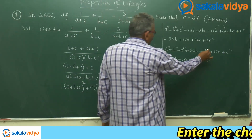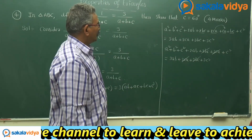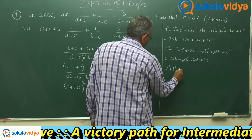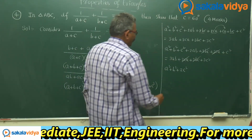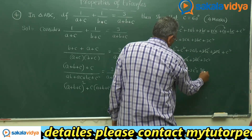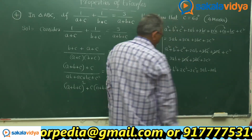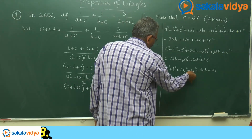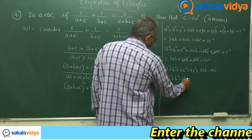So what happens: 3BC and 3BC get cancelled, 3CA and 3CA get cancelled. Now C square plus C square we can write as 2C square. So we have A square plus B square plus 2C square. Move 3C square to this side — it becomes negative. Transpose 2AB to that side, so 3AB minus 2AB gives AB. We get A square plus B square minus C square equals AB.